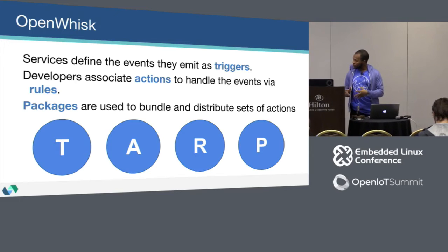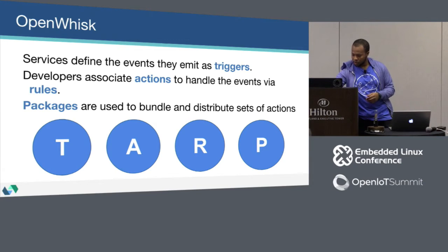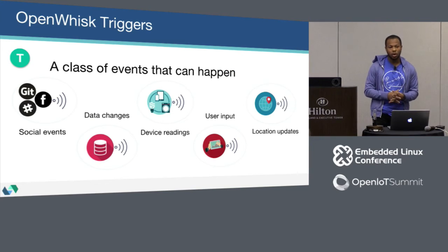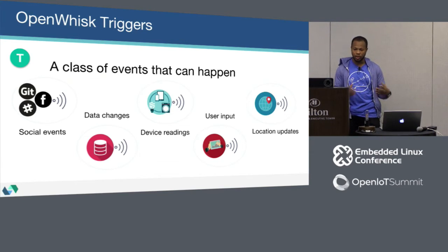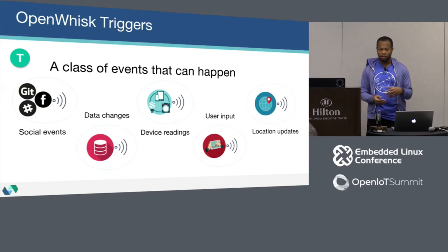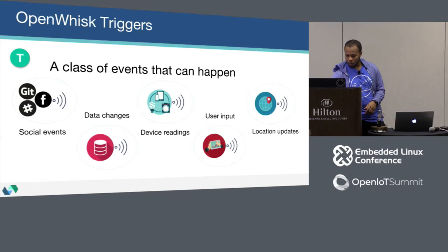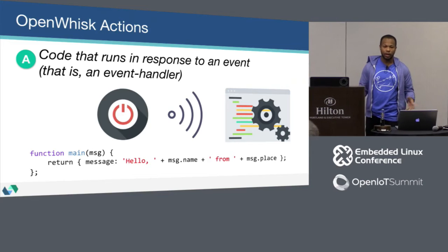There are four pieces to OpenWhisk: triggers, actions, rules, and packages. A trigger defines which events OpenWhisk should pay attention to. Triggers can be essentially anything — a webhook, database updates, incoming tweets, changes to hashtags, data from IoT devices, messages to an MQTT channel, and so on. You can also create custom triggers as needed.